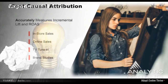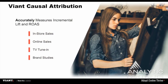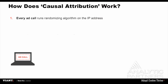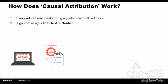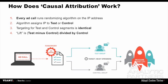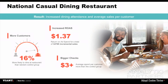For Viant's causal attribution, we look at impact on in-store sales, online sales, TV tune-in, brand lift, and brand resonance. How does it work? Every ad call runs through a randomizing algorithm on IP address — we start everything at the household level with the household IP, and devices are connected to that household. An algorithm assigns the IP to test or control — we're not creating a modeled group, we're doing a true assignment via algorithm. Targeting for test and control segments is identical, and lift is measured as test minus control divided by control.